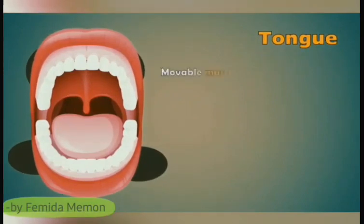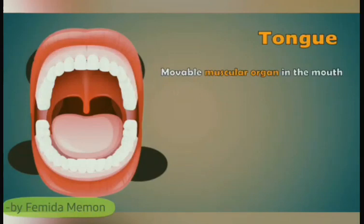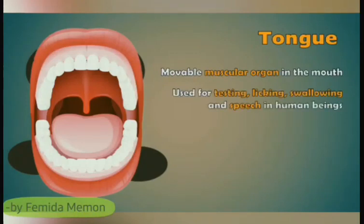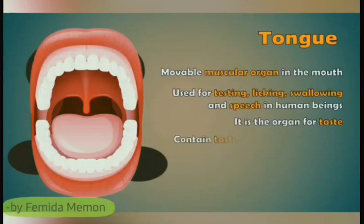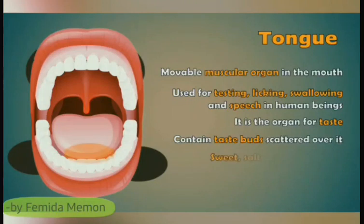Tongue: It is the movable muscular organ in the mouth that helps in the chewing and mixing of saliva with food. It is used for tasting, licking, swallowing and speech in humans. The tongue also serves as an organ for taste and contains taste buds scattered over it. It can differentiate sweet, salty, bitter and sour taste.